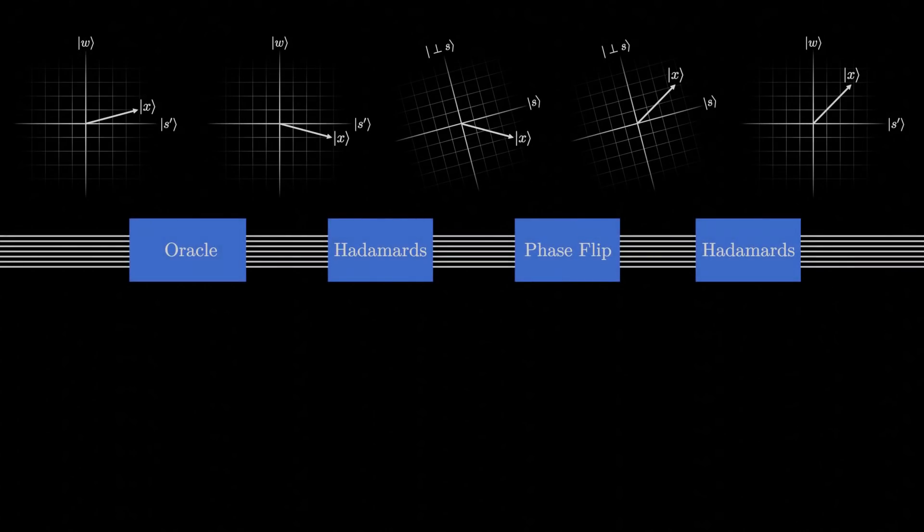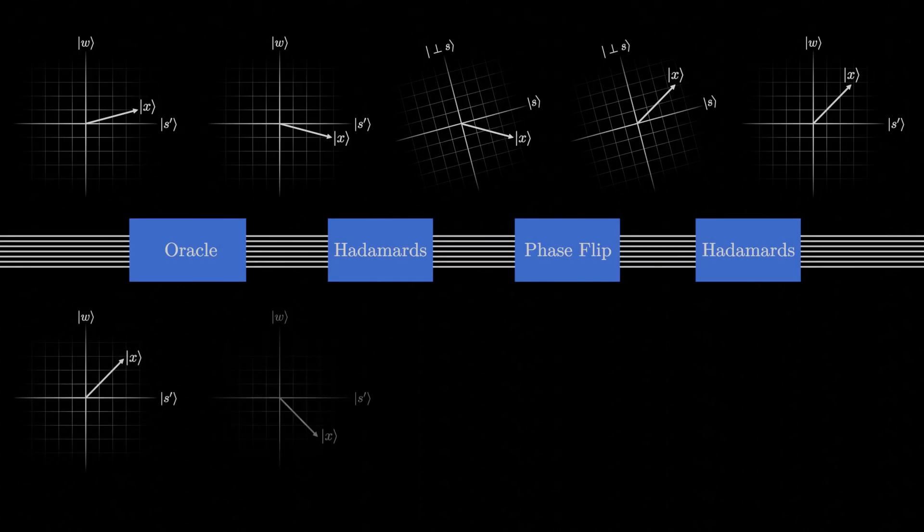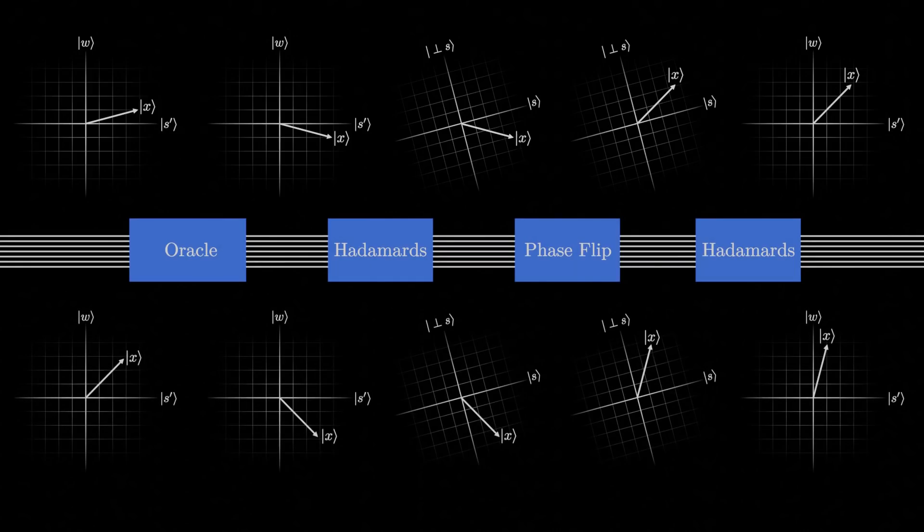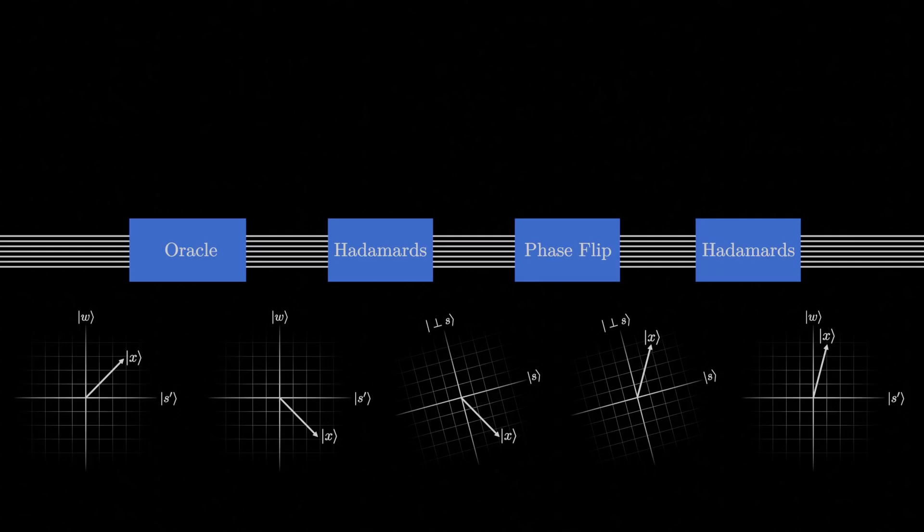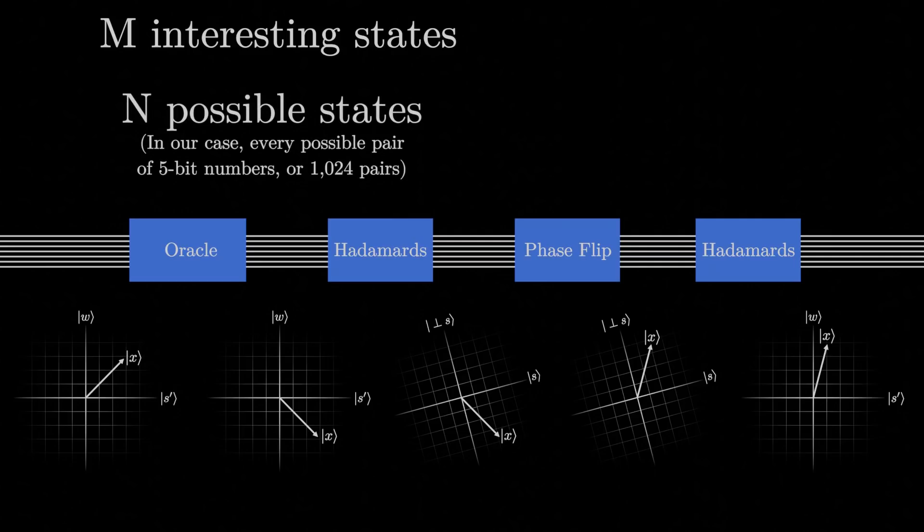If we step back and look at how these steps worked out graphically, notice how the state vector ended up pointing more towards w and less towards s-prime. If we repeat this process, we notice that this effect gets stronger every time. But all this ends up meaning is that if we are looking for m interesting states out of n possible states, the number of times we need to repeat this process is the square root of n over m.